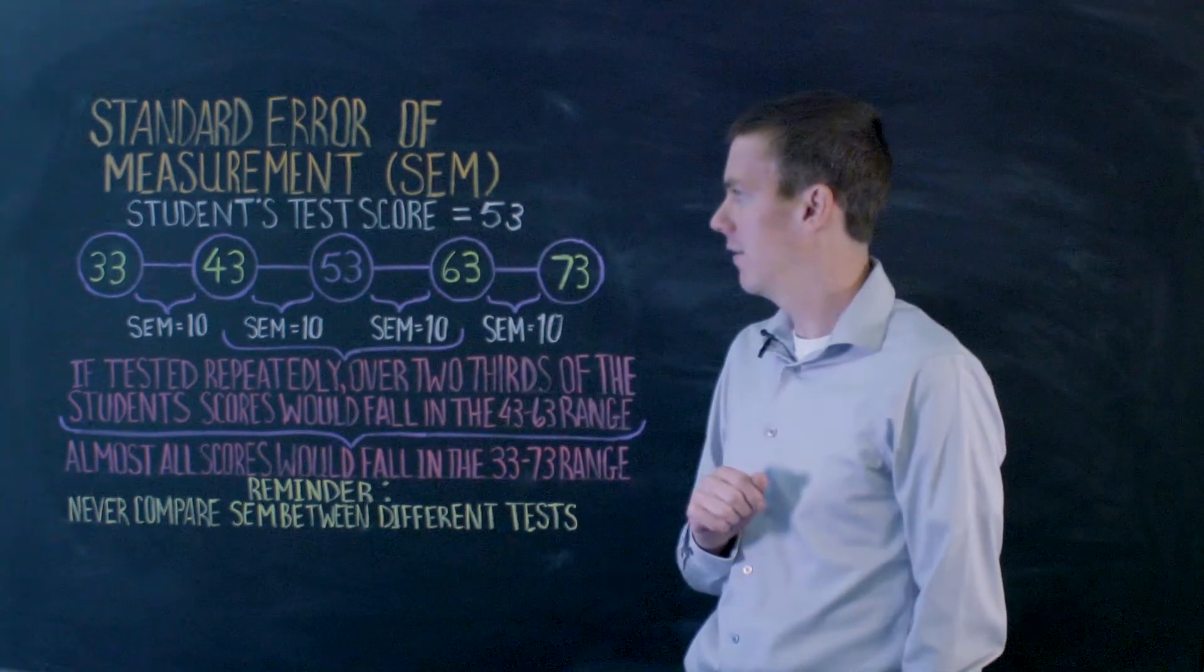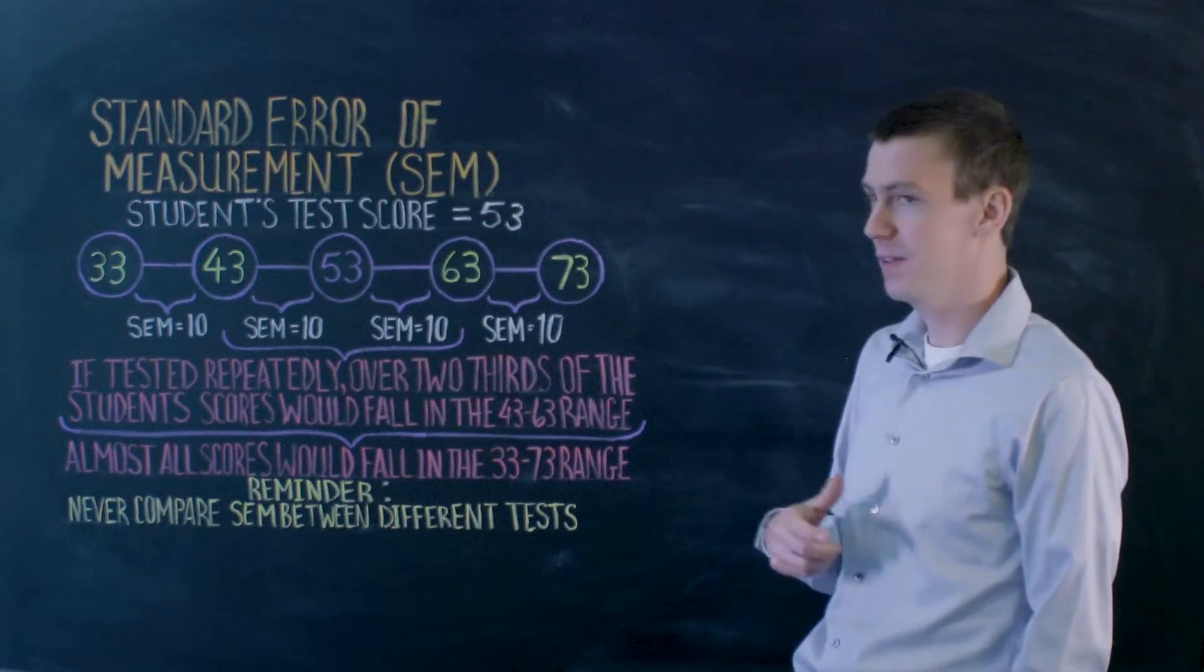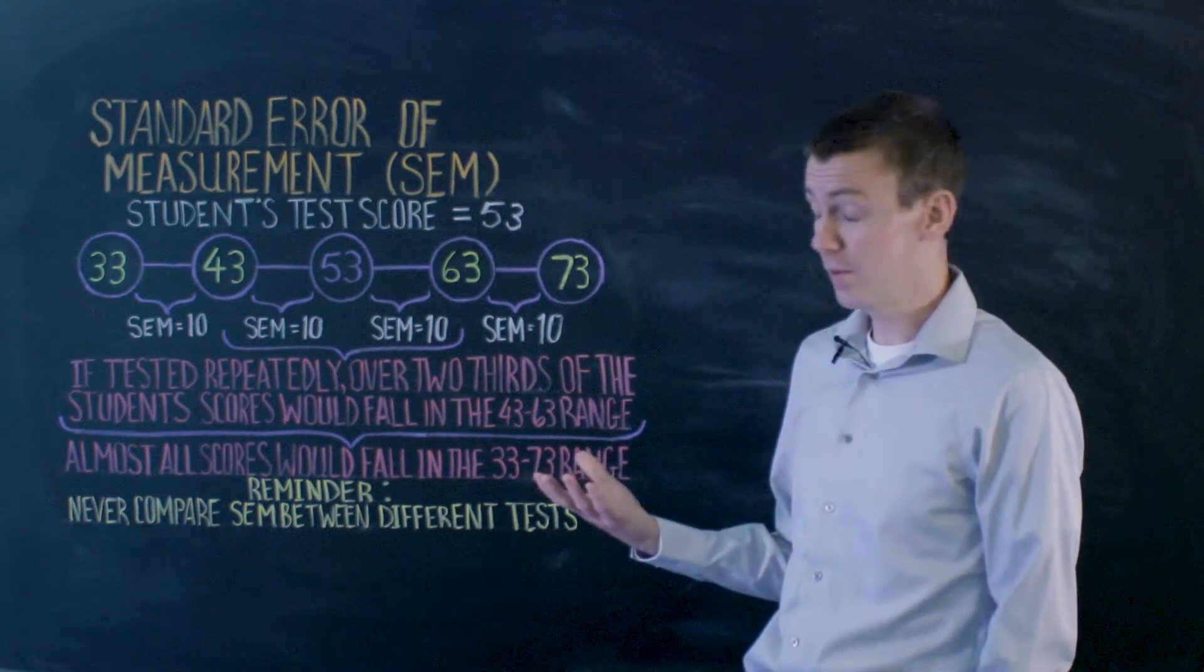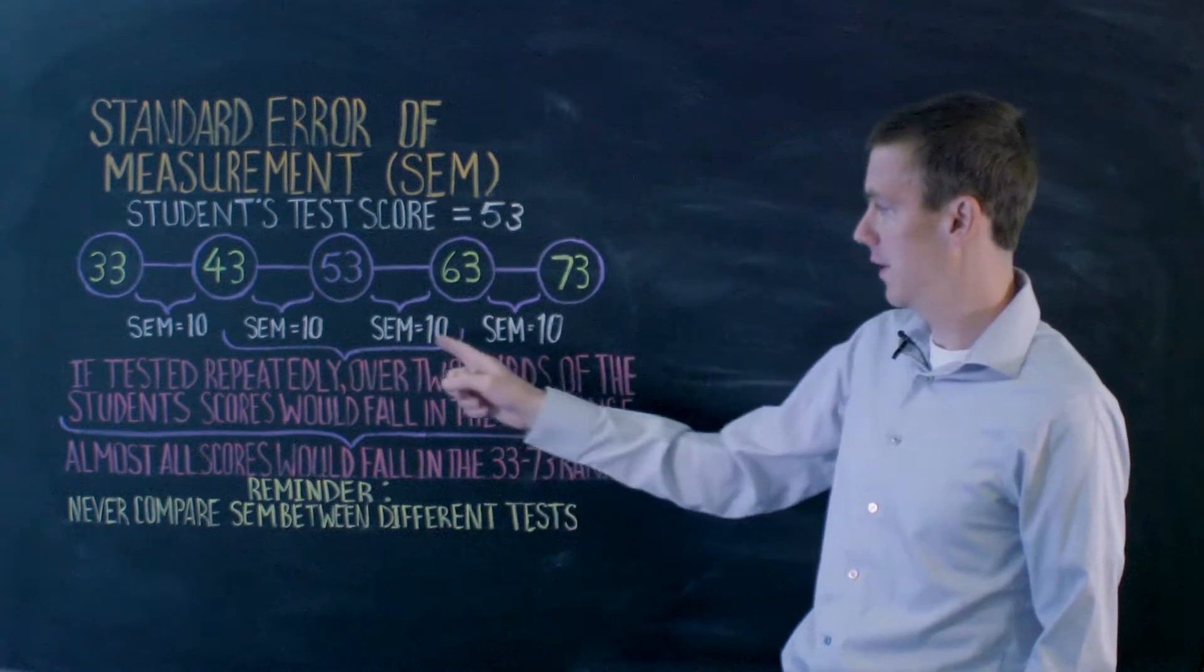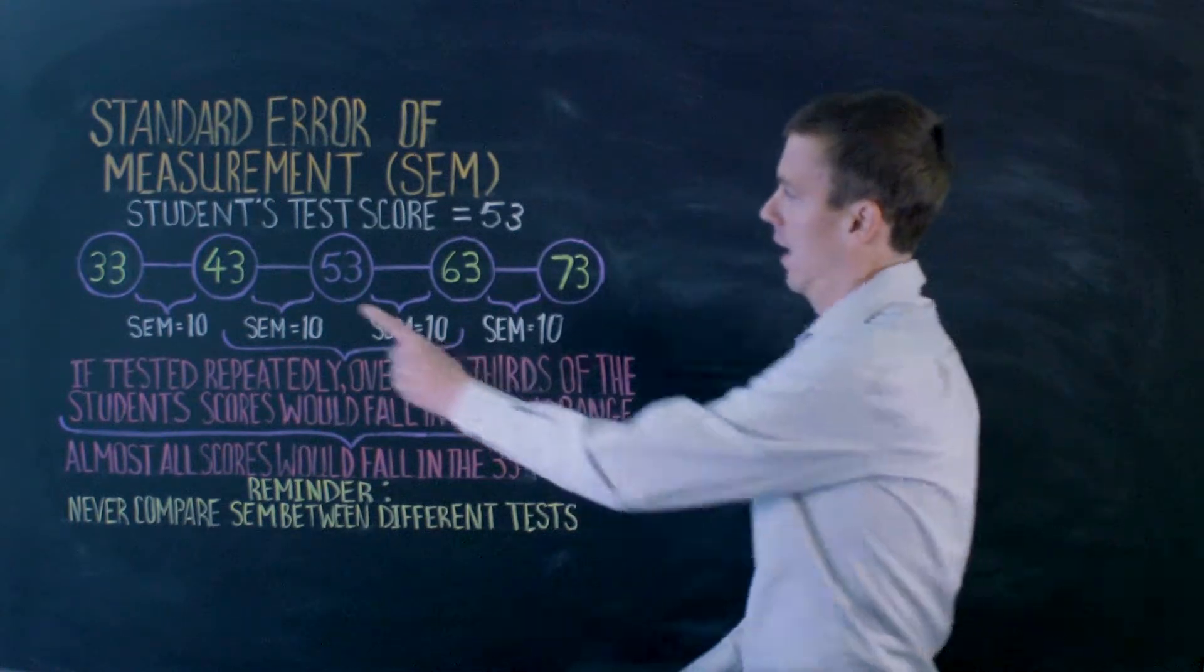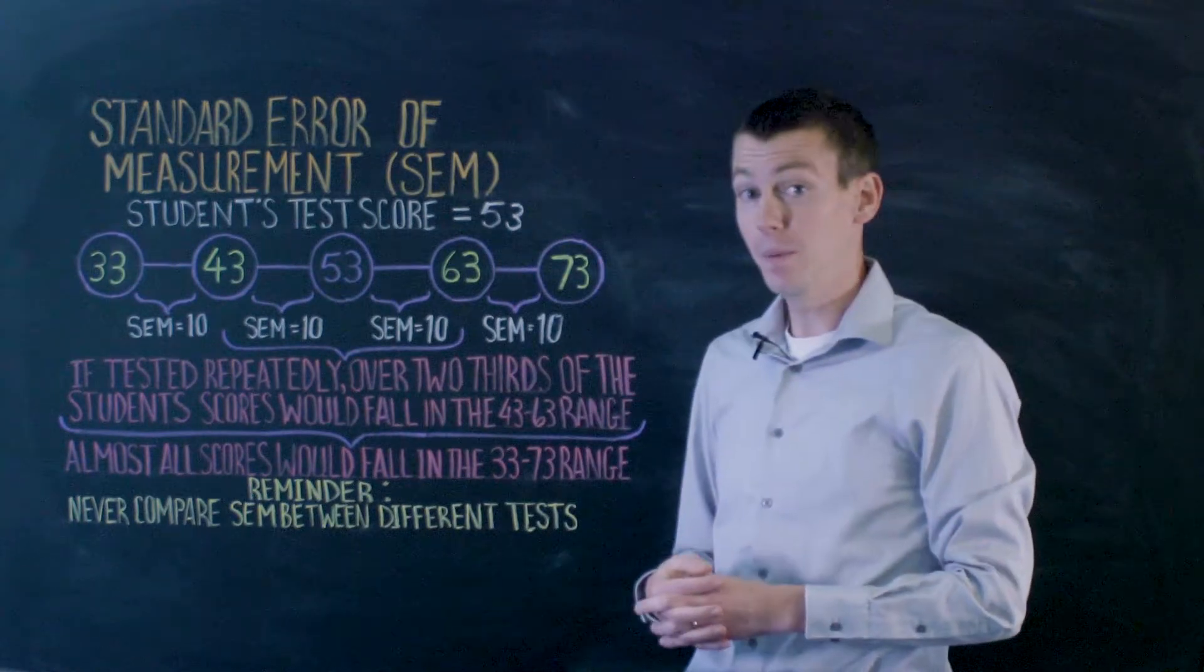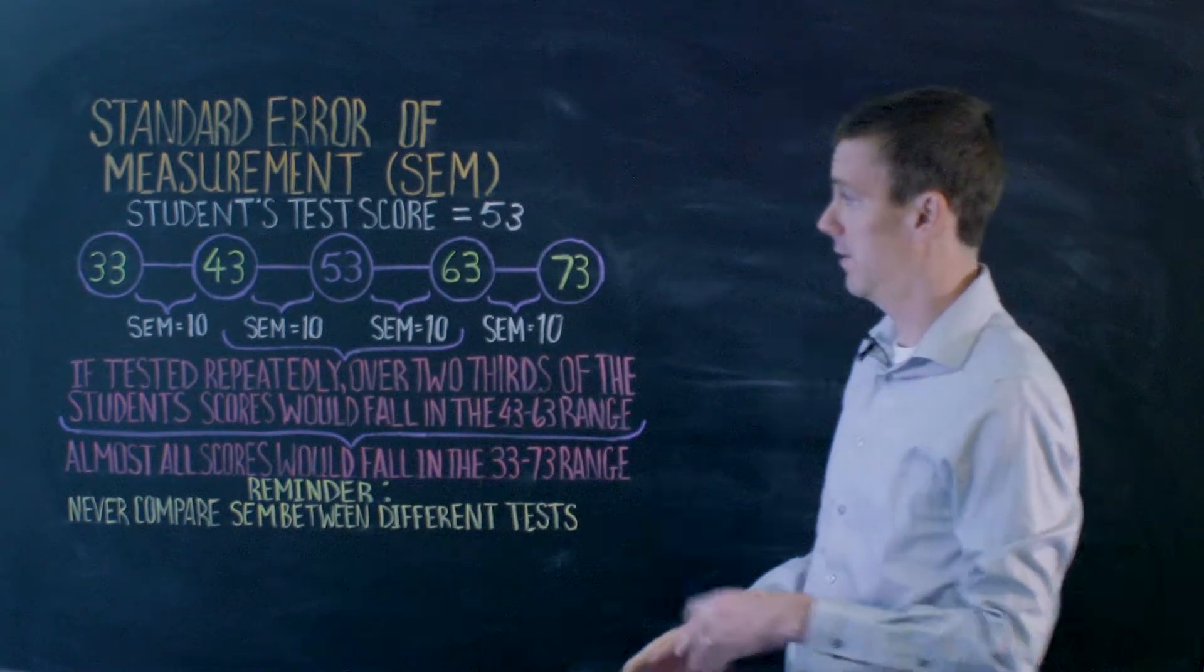Let's say that our test score for our student is 53. What our standard error of measurement does is it allows us to tell a range where we'd expect that student's score to fall if we were to repeatedly test them. So if our standard error of measurement is 10, we'd say, I think that test score is going to fall between 43 and 63 about two-thirds of the time. And for that same test score of 53, we'd say, I think it'd fall between 33 and 73 almost all the time.